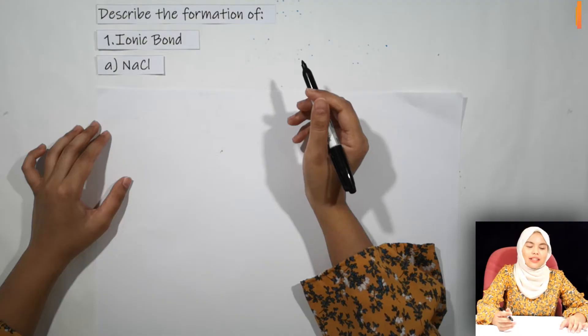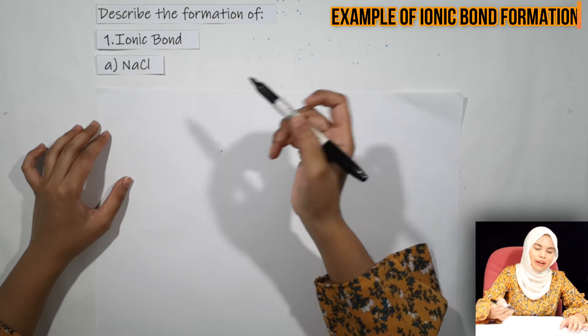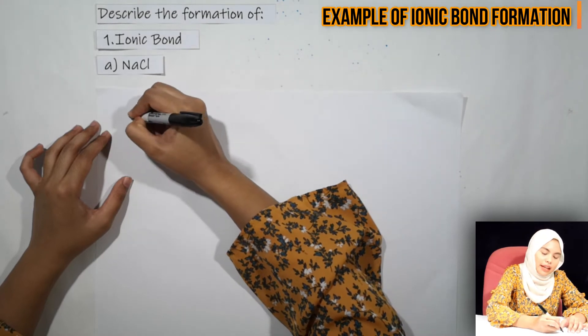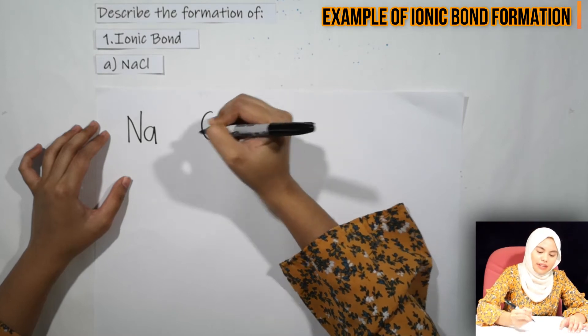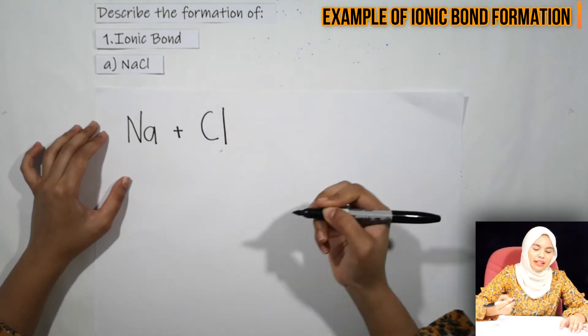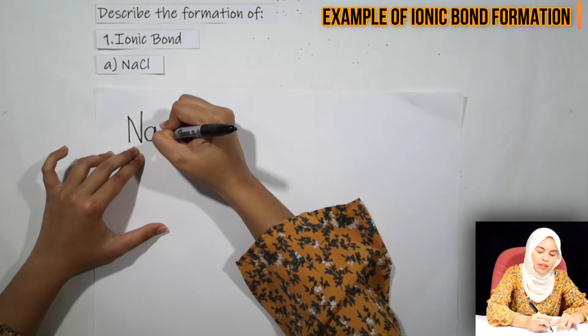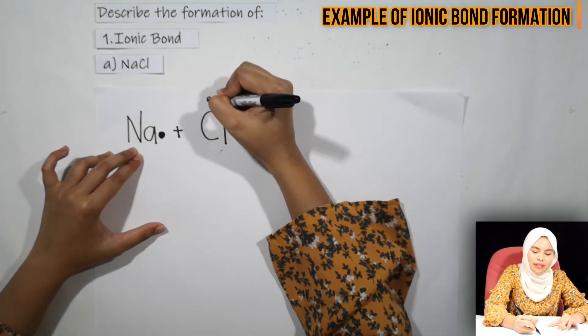Now I would like to teach you how to describe the formation of ionic bond, covalent bond, and dative bond. So now I would like to describe the formation of ionic bond using NaCl as an example. If you look at NaCl, we have the Na element and also the Cl element. In Na, we have only one valence electron, so we put one dot symbol. While in Cl, we have seven valence electrons.